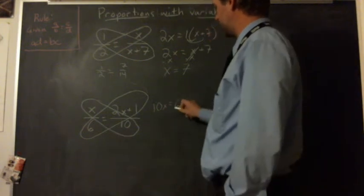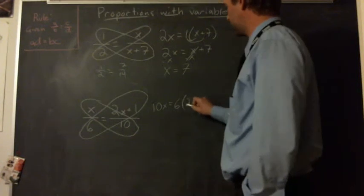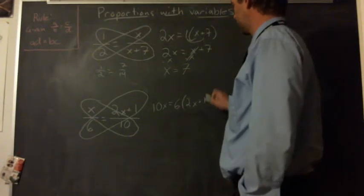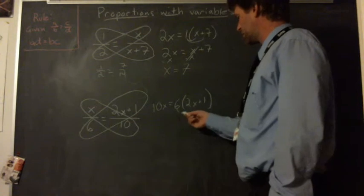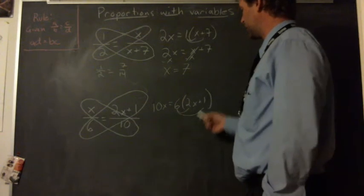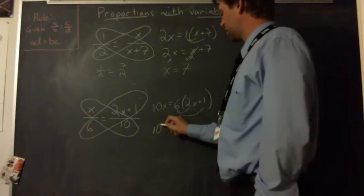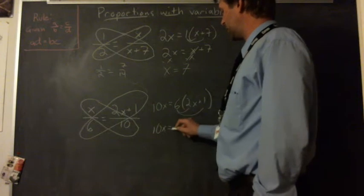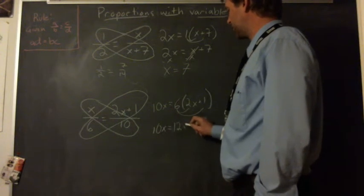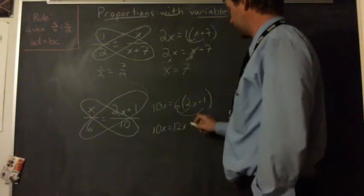Two x plus one times six. I'm going to write the six on the left so it looks like our usual distribution. Six times two x. Six times one. Six times two x is twelve x. Six times one is six.